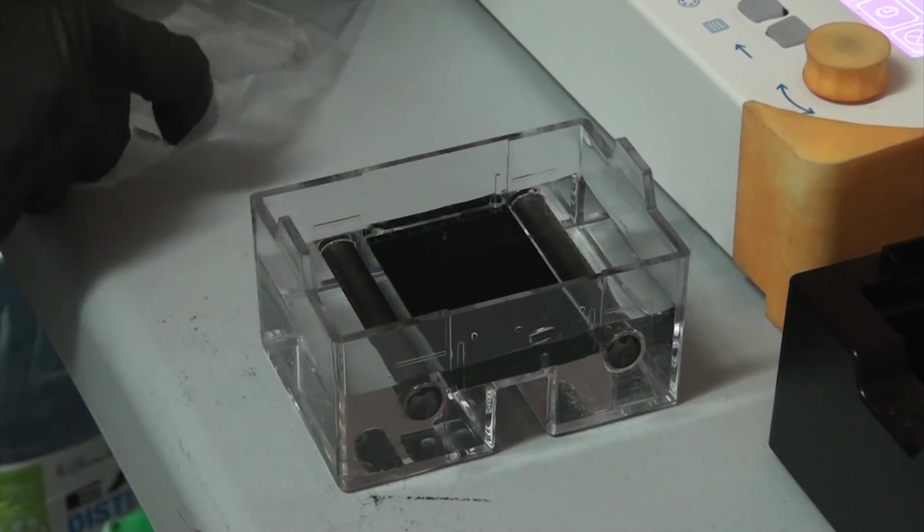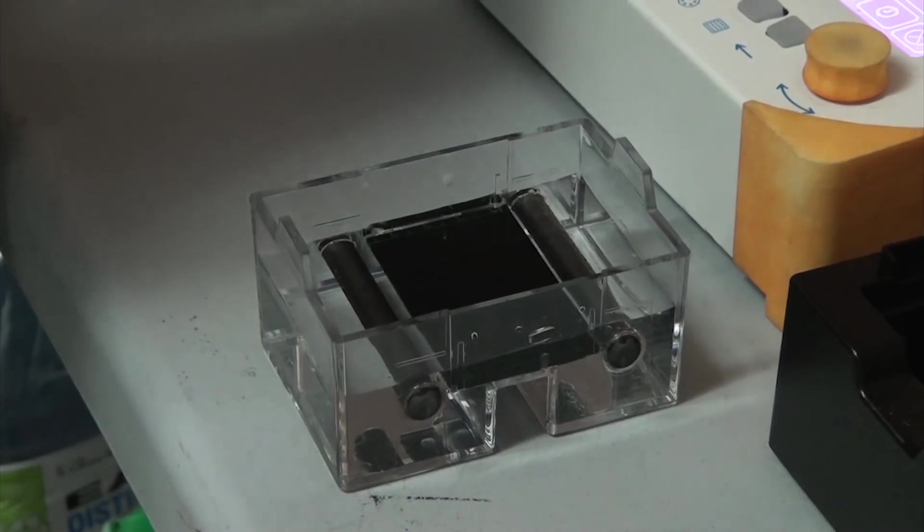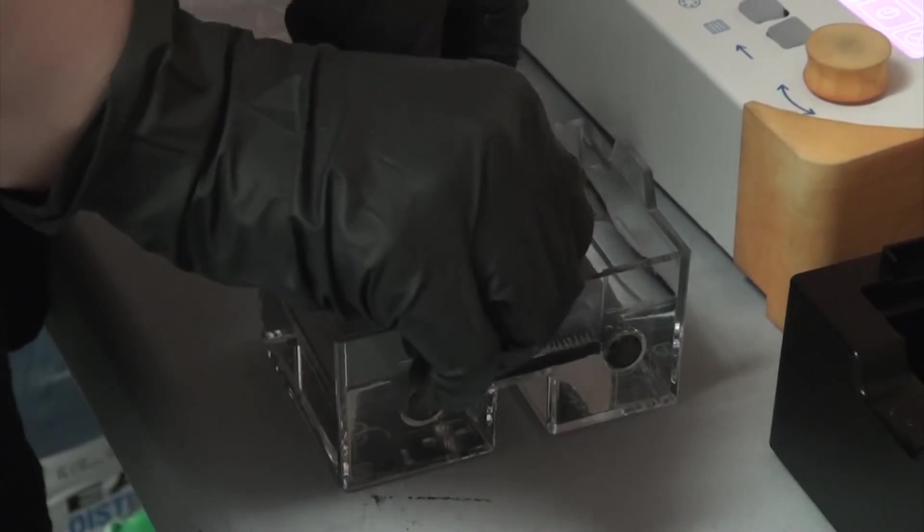When it comes to electrophoresis, there's a few things you'll need. The first is the gel box itself. This is basically just a tank that you can fill up with electrolyte that has a pair of electrodes in it and a place to put the gel in between them.